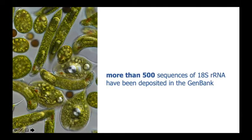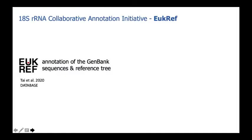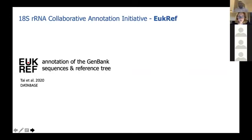A lot of sequences were generated for taxonomic and phylogenetic reasons, mainly 18S, and they are all deposited in GenBank. However, GenBank does not update taxonomy very quickly or adjust to current knowledge. So there is an initiative called the 18S rRNA Collaborative Annotation Initiative, EUCREF, focusing on many groups of protists. We recently finished the annotation of the whole Excavata group, including euglenophytes and heterotrophic euglenines. All sequences in GenBank were re-annotated based on current taxonomy, and a reference tree was built, which will soon be available in a journal database.